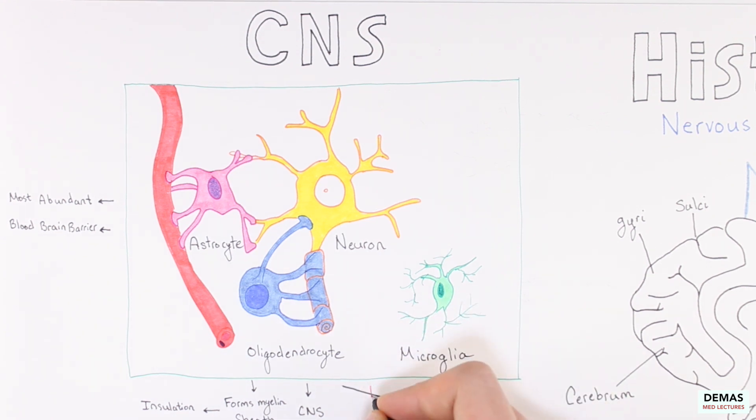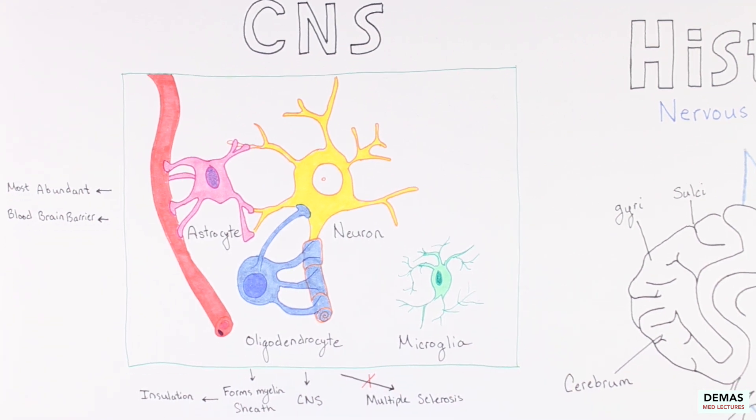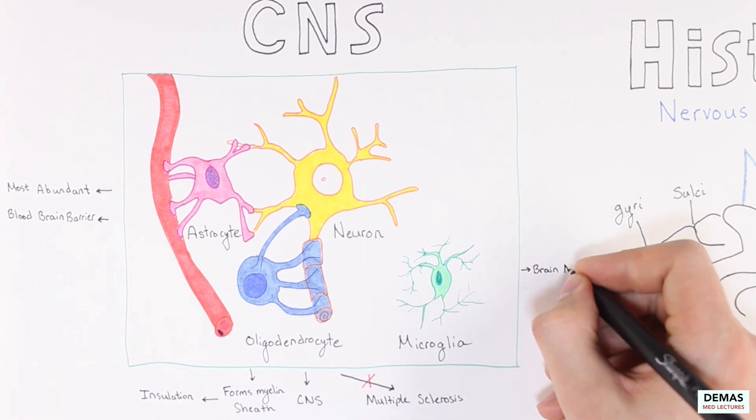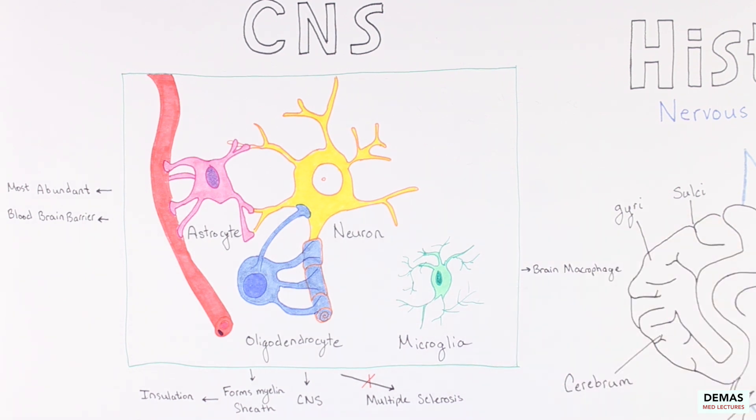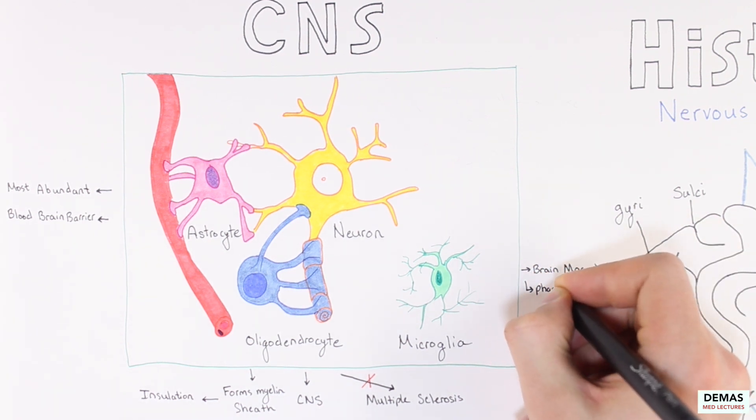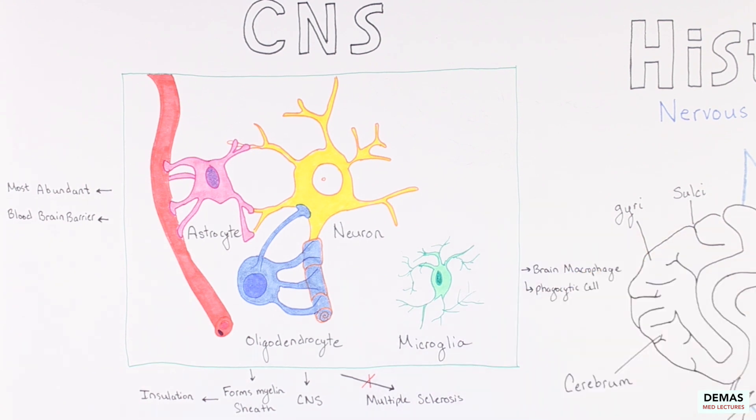This ultimately leads to the neurological symptoms of multiple sclerosis, including numbness, muscle spasms, balance problems, lack of coordination, and even blindness. And as mentioned, the microglia are specialized for phagocytosis and important for the active immune defense within the brain, as well as maintenance of neurons, such as removal of plaques and unnecessary connections.